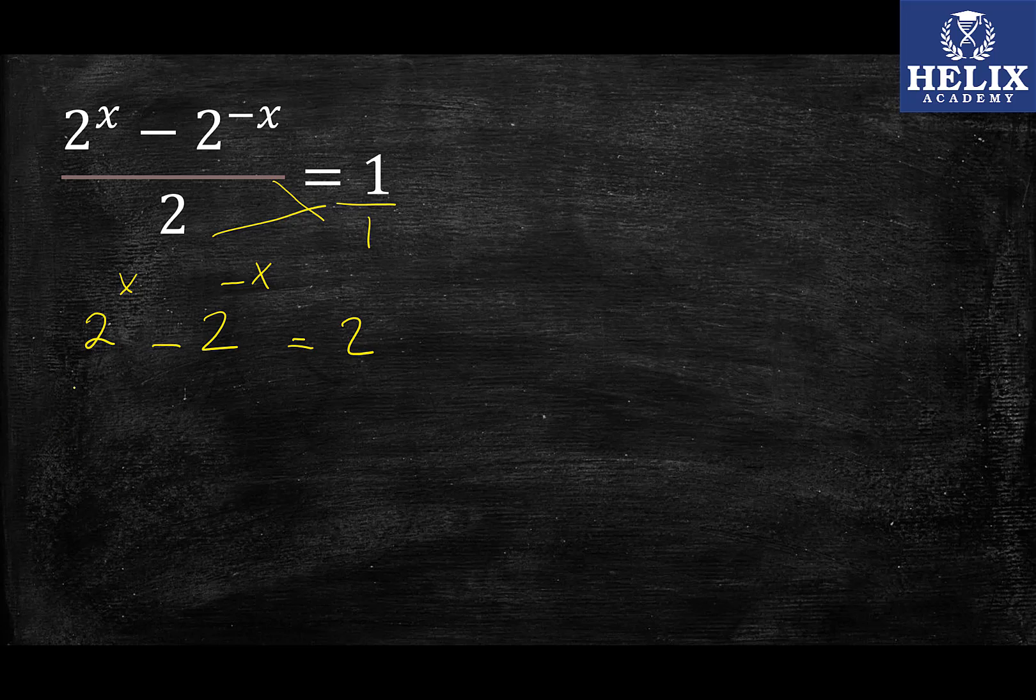So let's say if I did try to factor out 2^x, I will be left with a 1 for the first one and the second term which is 2^(-x), if I divided that by 2^x.